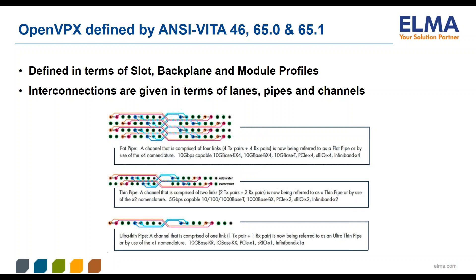The fat pipe is the most popular, which offers four transmit and four receive lanes. BASE-T Ethernet is usually implemented over a thin pipe, which provides two transmit and two receive lanes. Slot-to-slot Ethernet is now supported at speeds up to 10 gigabits per second over a single ultra-thin pipe, which provides one transmit lane and one receive lane.